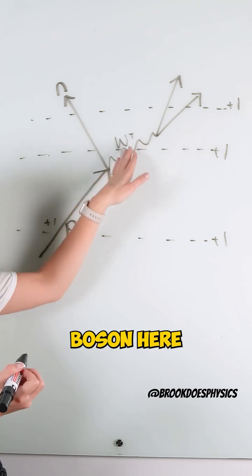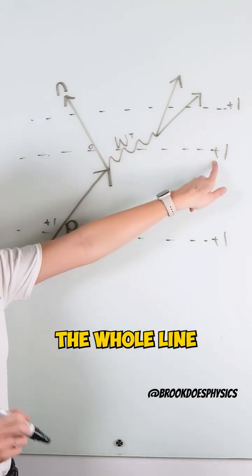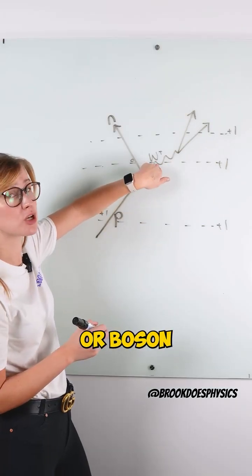And that's how I figured out it was a W positive boson here, because when we pass through the neutron with zero charge, the whole line has to have a positive one, so that means this must have been a positive particle, or boson.